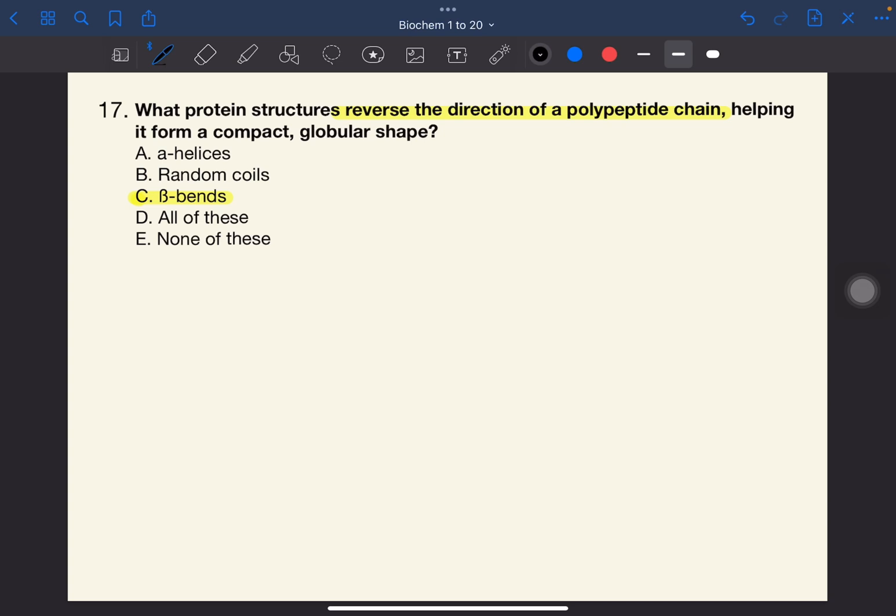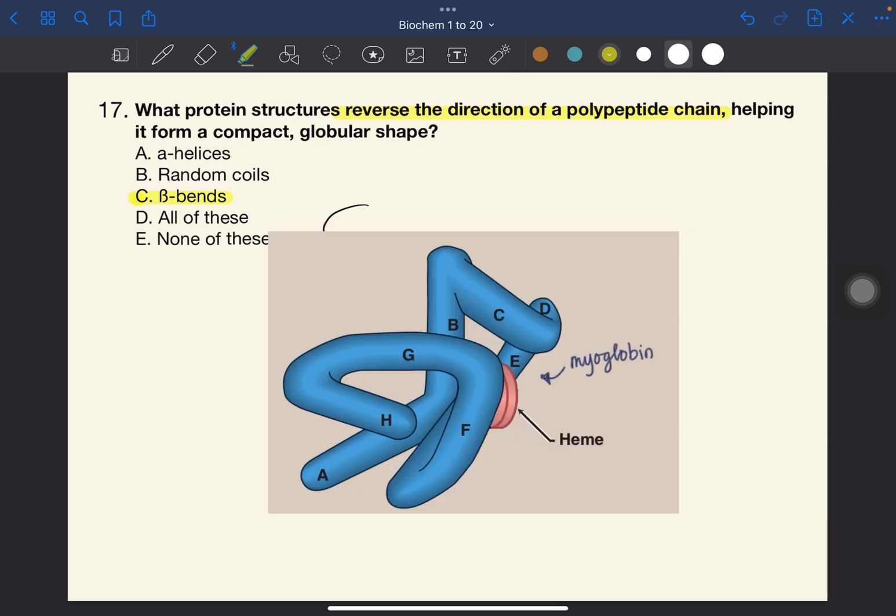Suppose these are beta sheets and then alpha helix. This would be the beta-bends. They reverse the direction of the polypeptide chain and help make the compact shape of a globular protein.